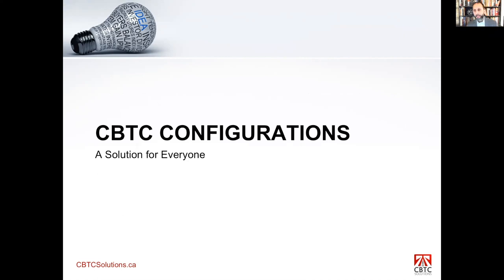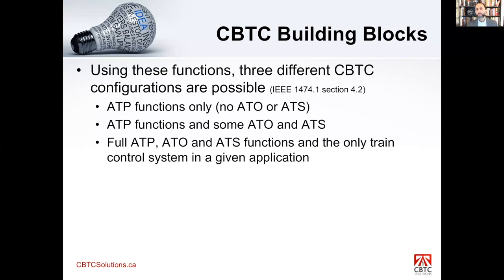Those are the building blocks — ATP, ATO, and ATS — that make up a CBTC system. Based on these three building blocks there are different CBTC configurations. Many assume there is only one type of CBTC, but that's not the case. The basic definition — no track circuits and communicating position to the wayside — doesn't necessarily mean driverless. You can have three configurations: ATP only, with no ATO or ATS; ATP with some ATO and ATS functions; or a full ATP, ATO, ATS driverless system — UTO, GOA 4, and all those terms.